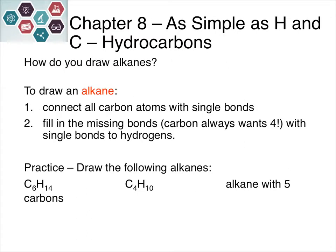Next we'll talk about how to draw alkanes. First, see how many carbon atoms you have and connect them with single bonds — everything must be single bonds for alkanes. Then fill in missing bonds so that all of your carbons have four bonds total, filling those in using hydrogen atoms. If you give all carbons four bonds, you should be using the correct number of hydrogens.